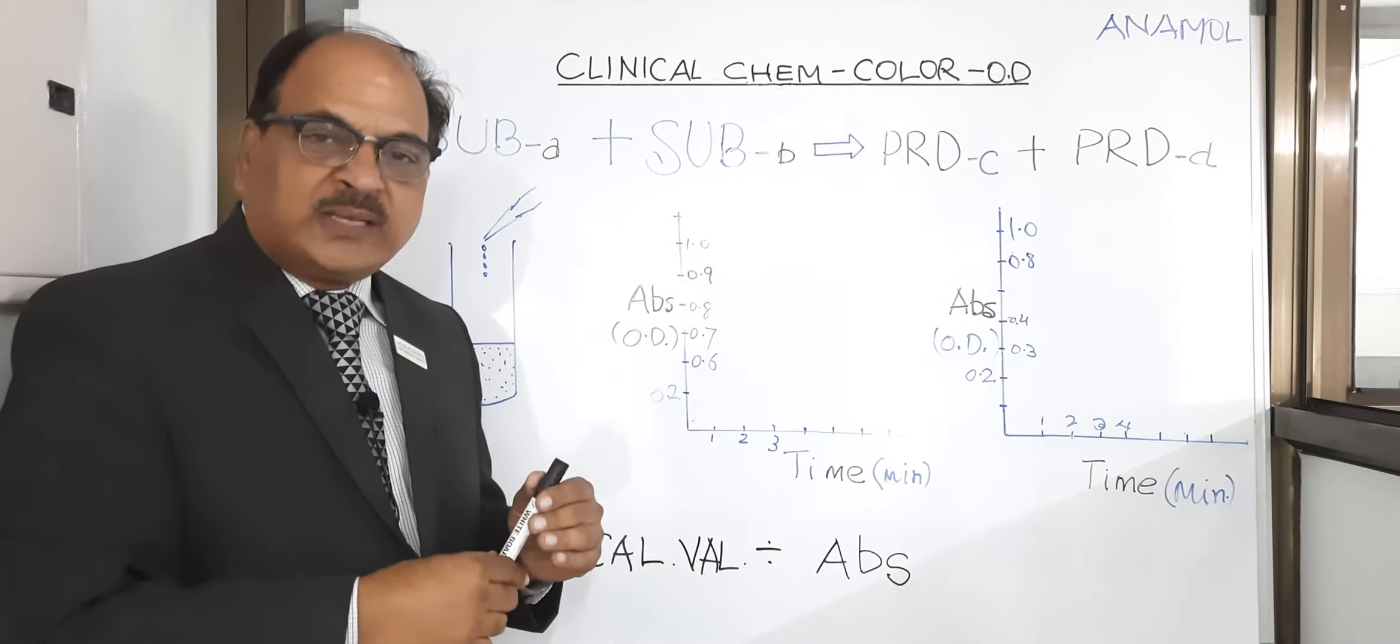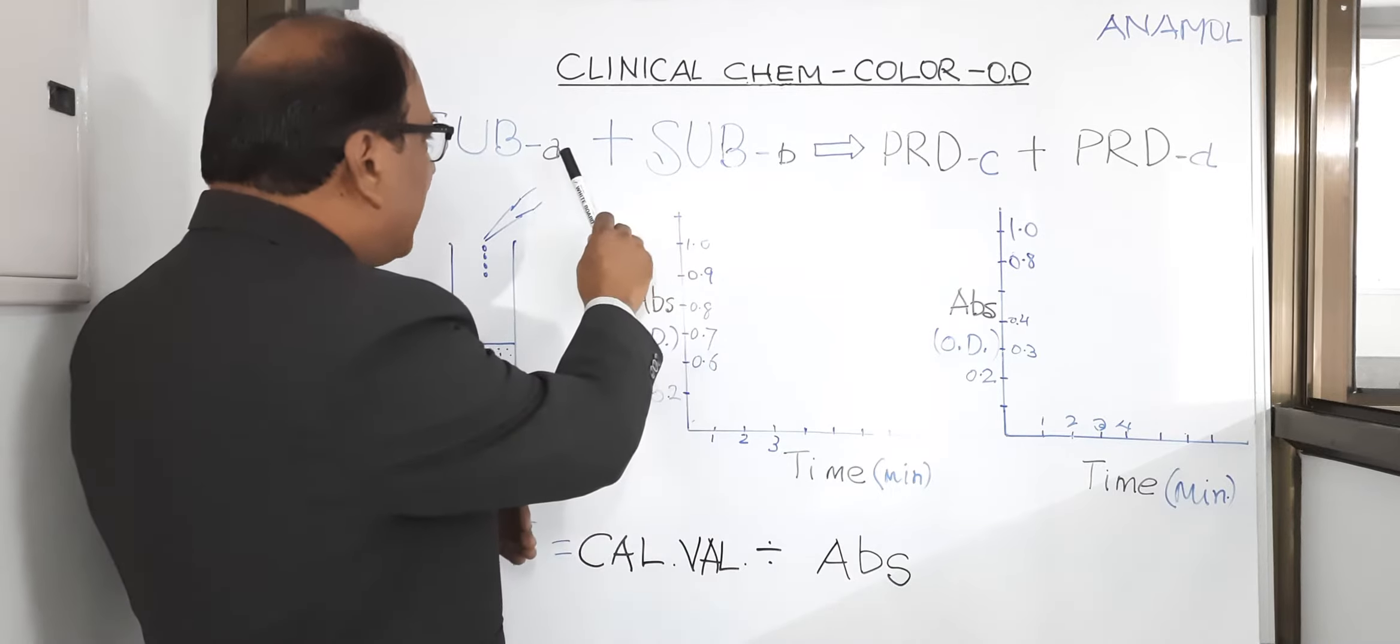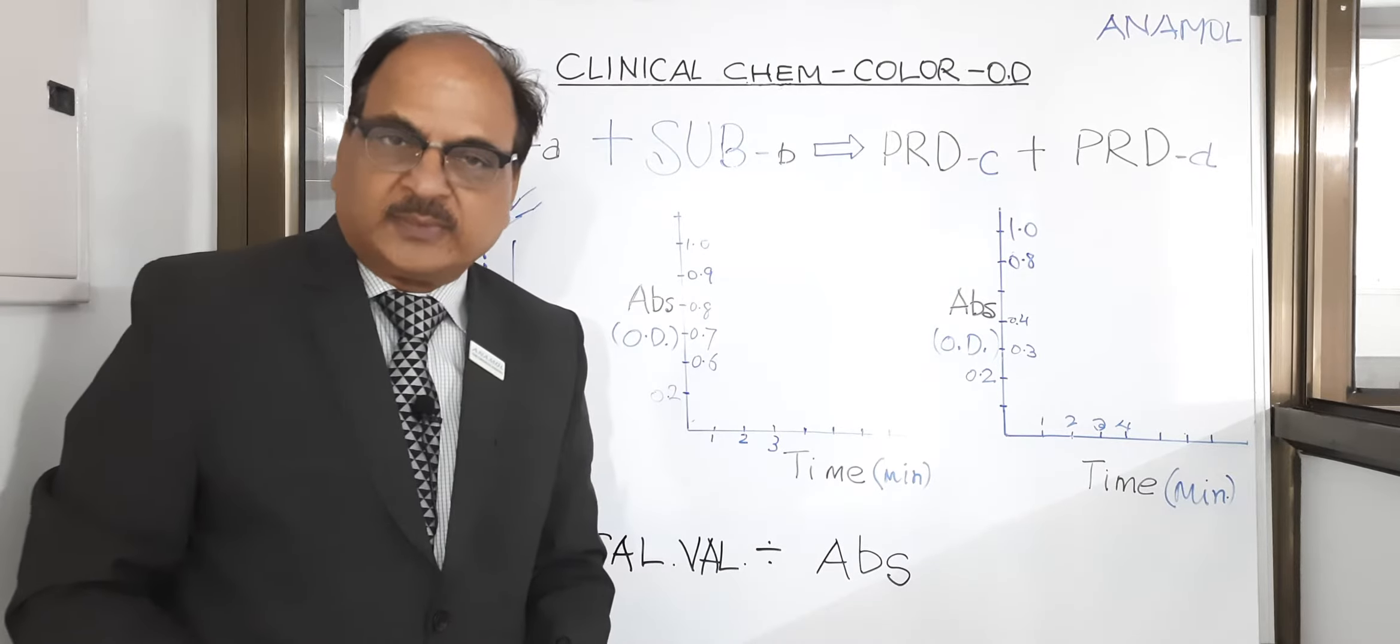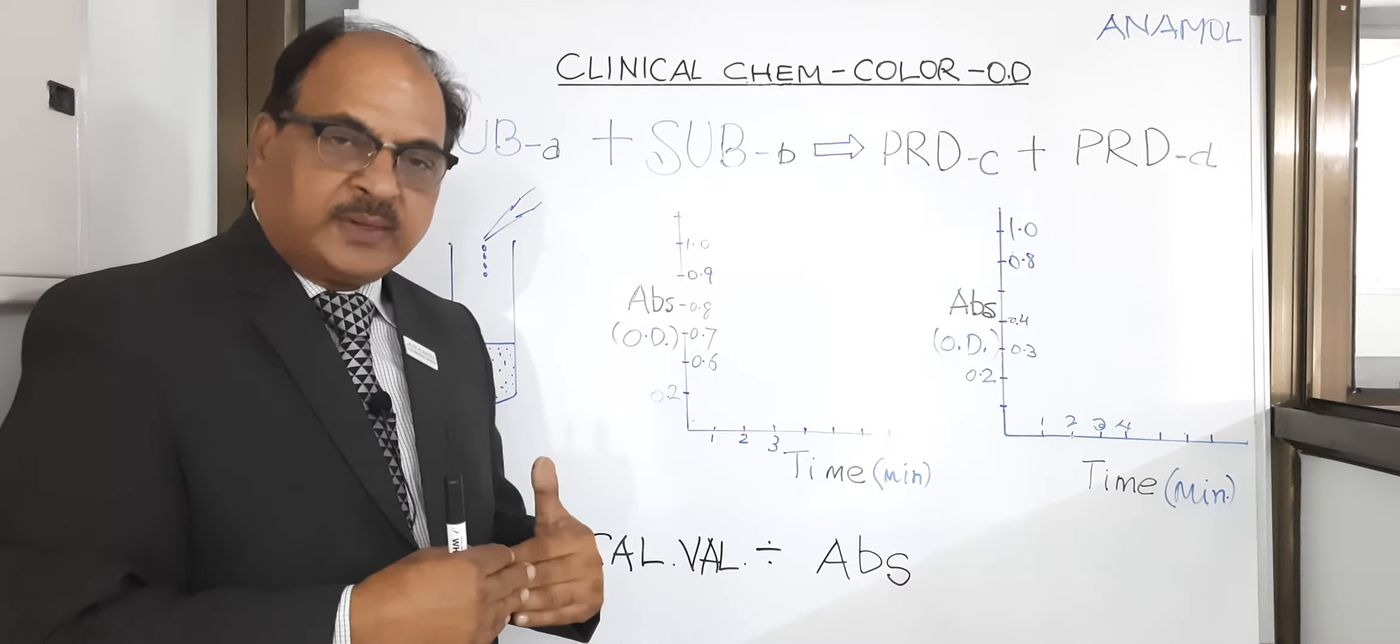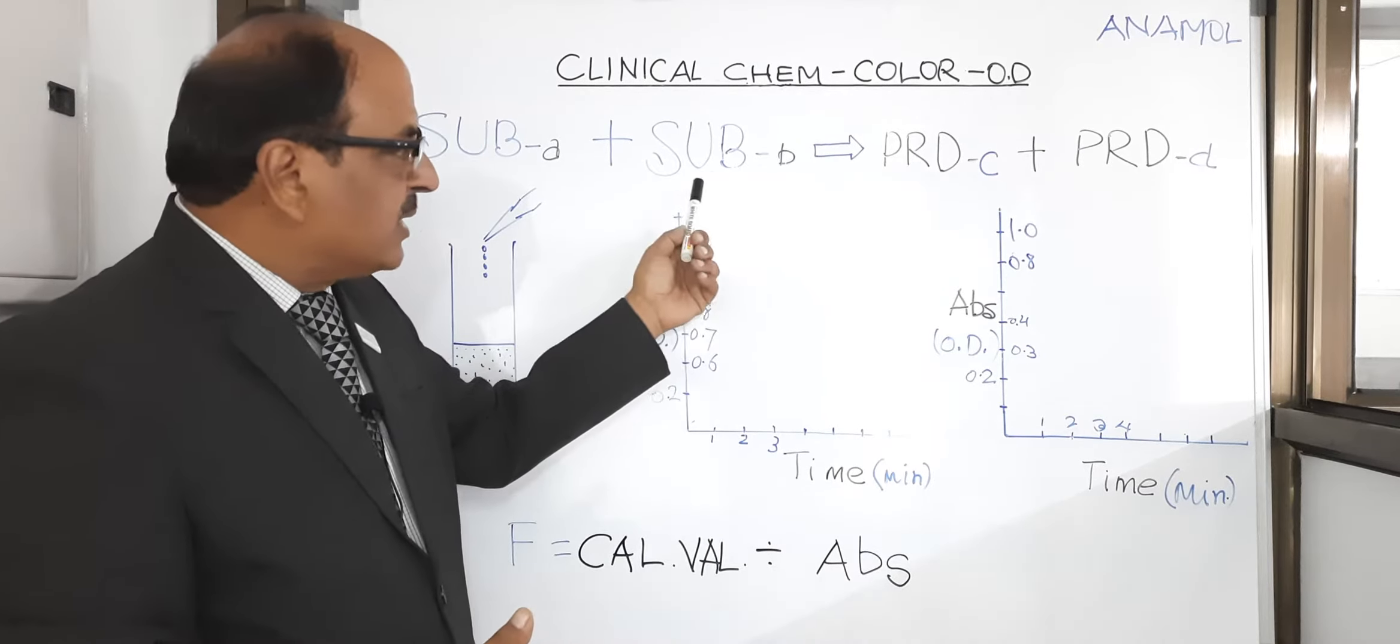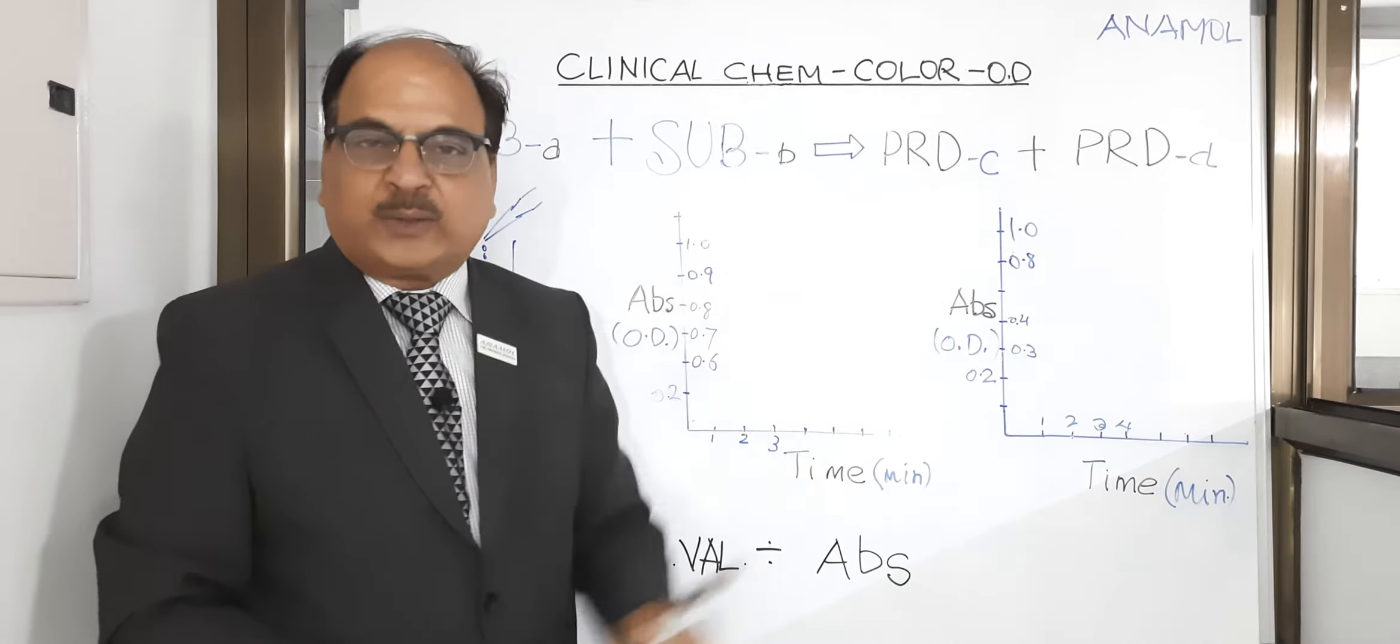In the principle of this chemistry, it always has some substrate. When the reaction goes on, they become product. For example, in case of glucose, the glucose from serum reacts with 4-aminoantipyrine, phenol, etc., producing a red quinoneimine dye and gluconolactone.